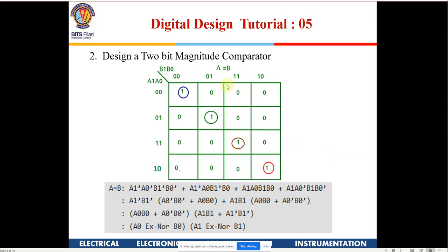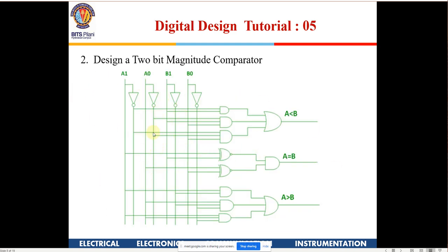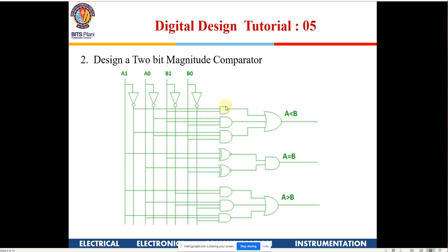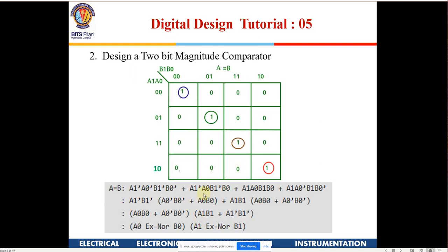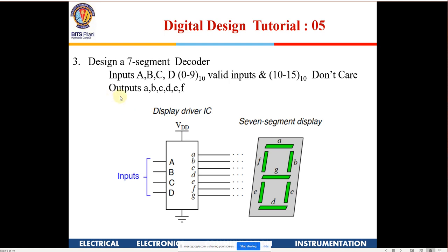For A less than B: when A is 0 and B is 1, 2, or 3; when A is 1 and B is 2 or 3; and when A is 2 and B is 3 — you group all these, derive the equations, and make AND then OR gates. The equal condition simplifies to an XNOR gate. This is how a 2-bit magnitude comparator is built.